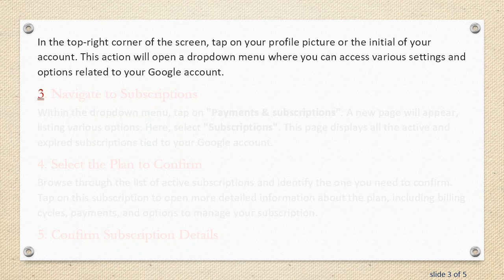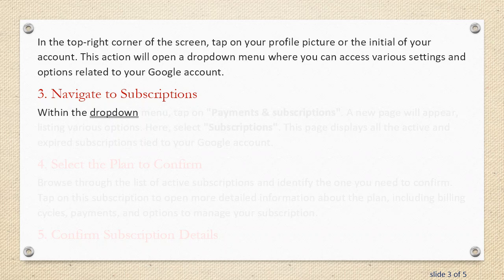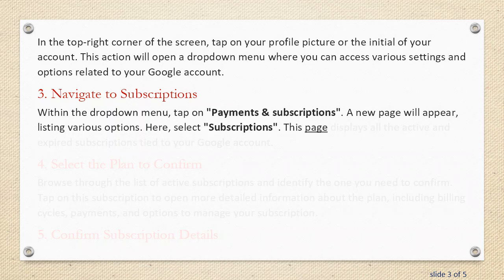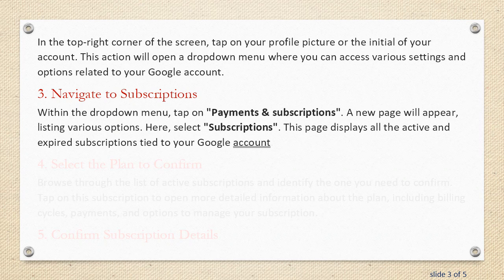Step 3: Navigate to Subscriptions. Within the drop-down menu, tap on Payments and Subscriptions. A new page will appear listing various options. Here, select Subscriptions. This page displays all the active and expired subscriptions tied to your Google account.